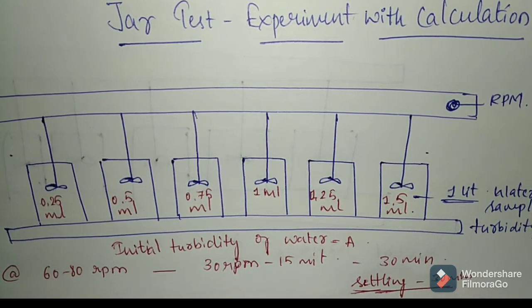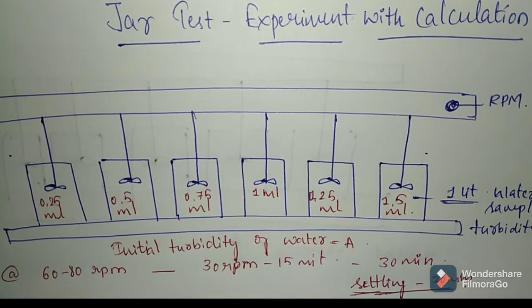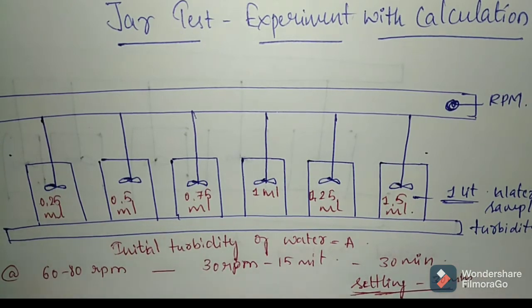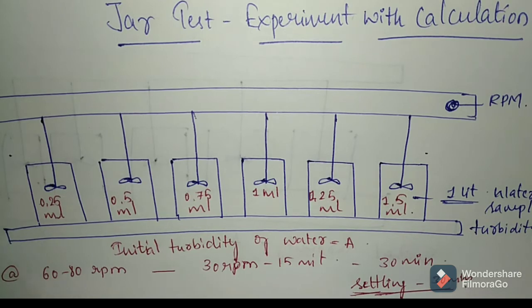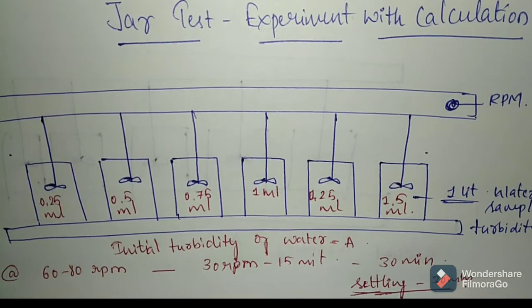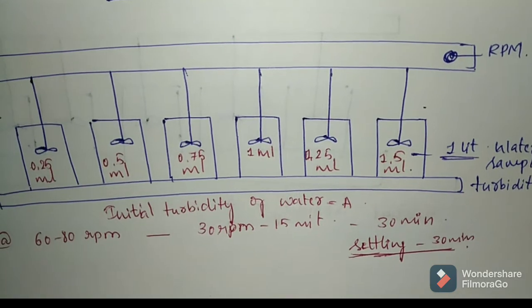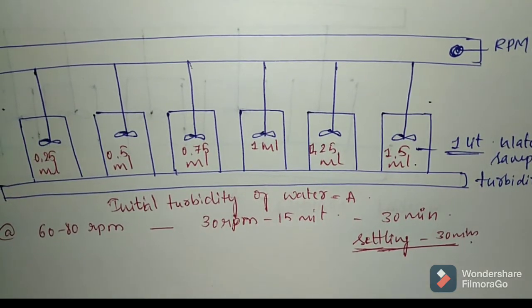As more time is given, settling will be more. After keeping out these samples, select the minimum dosage giving the best floc formation and settling characteristics. This is how we are going to calculate — based on the observation procedure. Let us go for the calculation and how we note down the results.